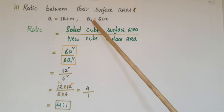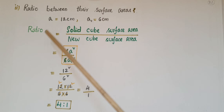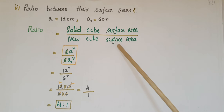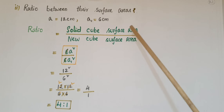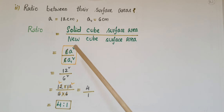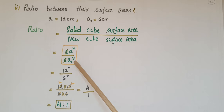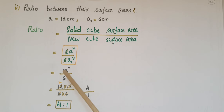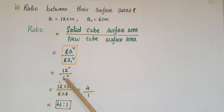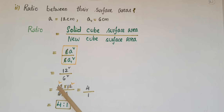Now we have to find the ratio between the surface areas. Here a = 12 centimeters and a1 = 6 centimeters. The ratio is equal to the surface area of the solid cube divided by the surface area of the new cube. We know the total surface area of a cube is 6a², so the ratio is 6a² / 6a1². Cancelling 6, we get a² / a1², which is 12² / 6².